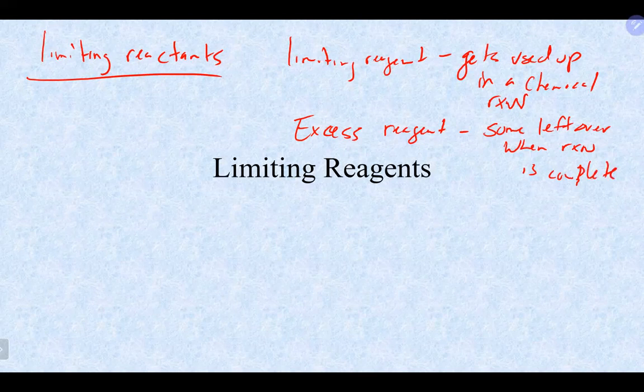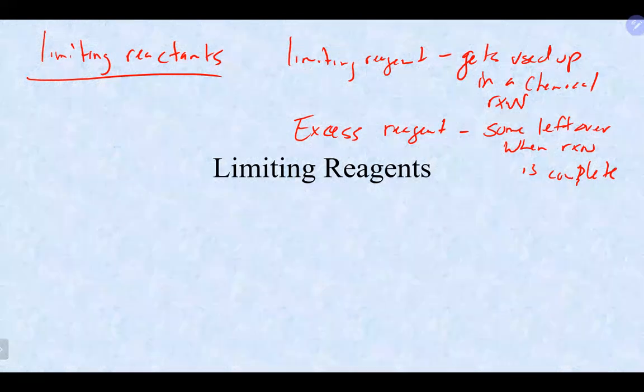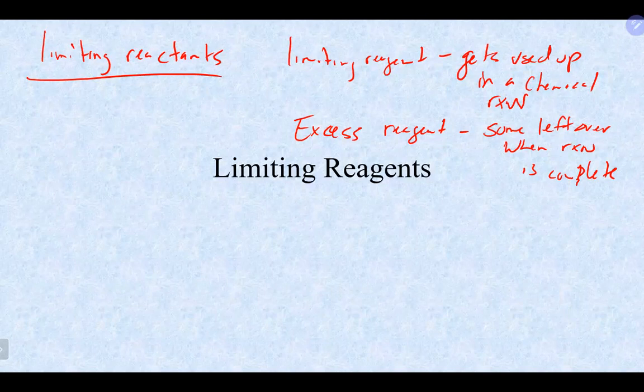For example, in the experiment we did the other day with potassium iodide — you weighed out a little solid, and that was the limiting reagent. You used 25 milliliters of the other reagent, and you had plenty of it with some left over when it was all done — that is the excess reagent. It is always the limiting reagent that determines how much product you can make.